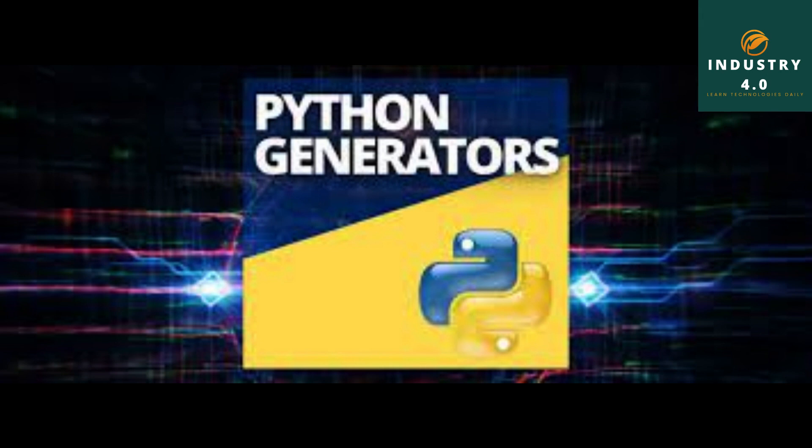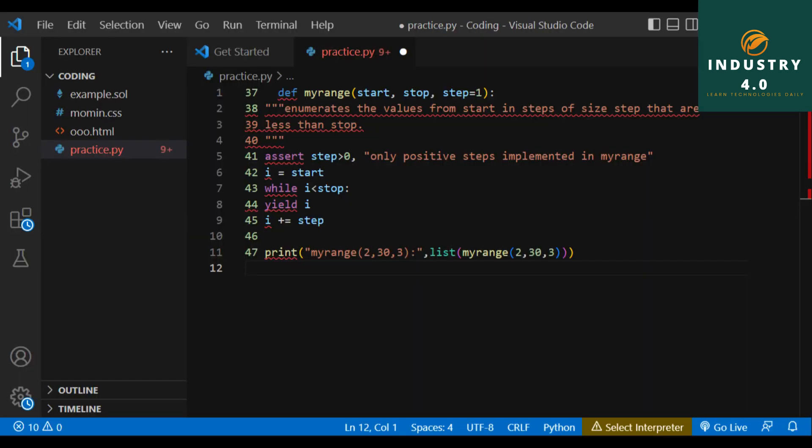Example. A version of the built-in range, with two or three arguments, and positive steps, can be implemented as: def my_range(start, stop, step=1): enumerates the values from start in steps of step that are less than stop. assert step > 0, only positive steps implemented in my_range. i = start. while i < stop: yield i. i += step.